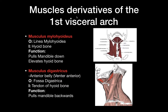The muscles that derive from the first visceral arch are two muscles. The first one is musculus mylohyoideus. It originates from the linea mylohyoidea of the mandible and inserts at the hyoid bone. The function of this muscle is to pull the mandible down while at the same time elevating the hyoid bone. There are two muscles on each side, and when they fuse in the middle, they form the floor of the oral cavity.